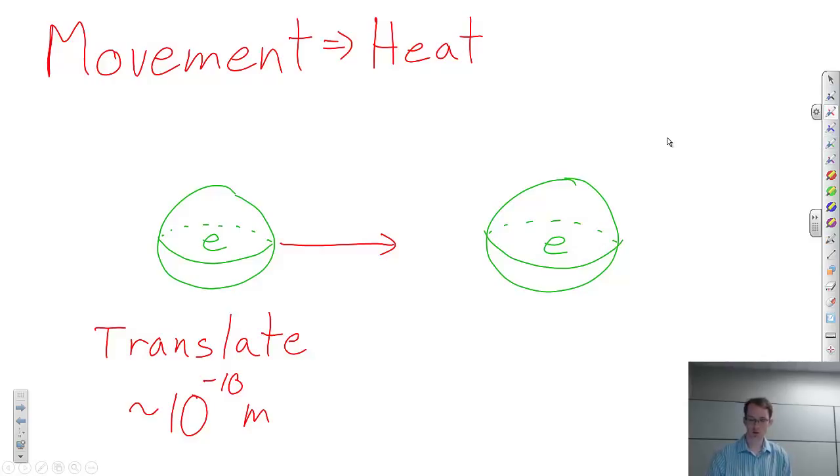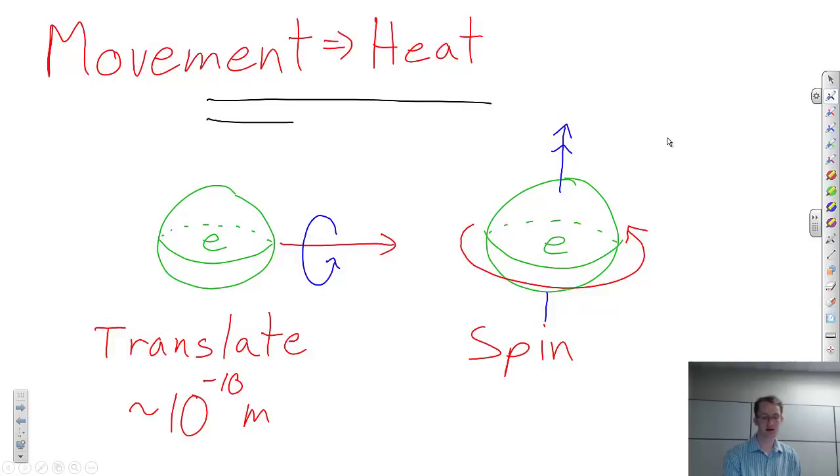And an electron can also spin. So it can spin about a particular axis. And that spinning motion and this translation motion will affect the way the electron interacts with the world. And it does it in a seemingly surprising way. By translating the electron, you actually create a magnetic field. There's a link between electron motion, or the motion of a charge, and the creation of a magnetic field. So if an electron moves, a magnetic field will be created. And if an electron spins, a magnetic moment will be created. So there's a link between the motion of a charge and the creation of a magnetic field. And we know this to be true because of things called electromagnets.